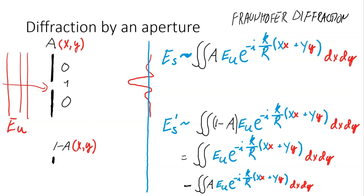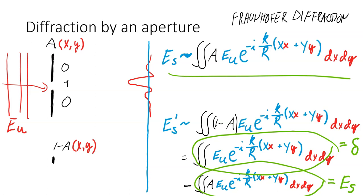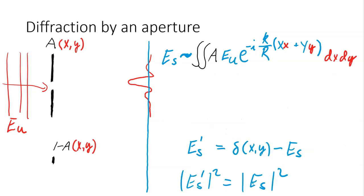The first part is the diffraction of an unobscured wave, and it is a delta function. The second part we can recognize as diffraction of the initial aperture. The diffraction in this case consists of a delta function at the origin and the diffraction pattern of the original aperture in opposite phase. If we neglect the delta function at the origin, we see that the intensity of the diffracted light is equal for the original aperture and its complementary aperture.